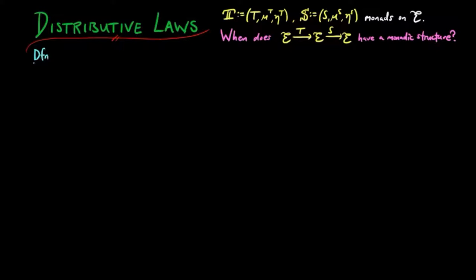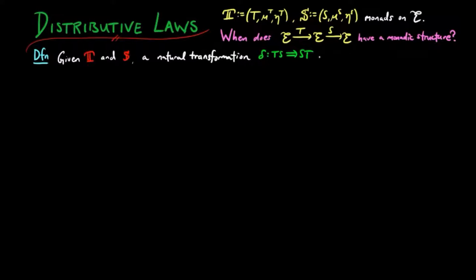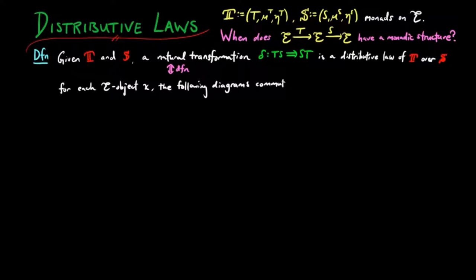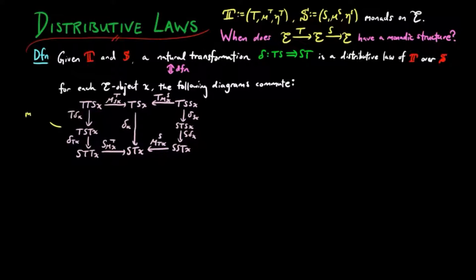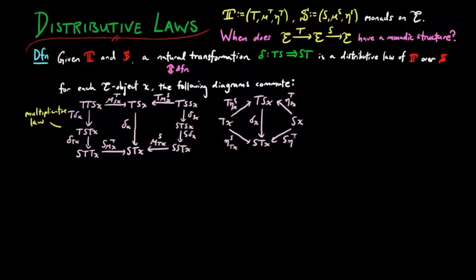We start with the definition. Given monads T and S as above, a natural transformation delta from TS to ST is a distributive law of T over S if and only if, for each E object X, the following diagrams commute. The commutativity of the left-hand diagram is called the multiplicative law for delta, and the commutativity of the right-hand diagram is called the unit law for delta.